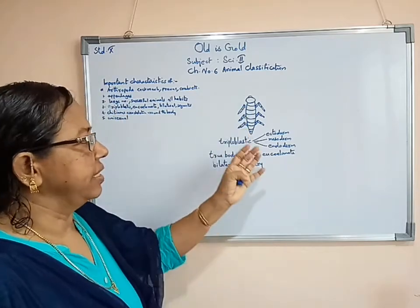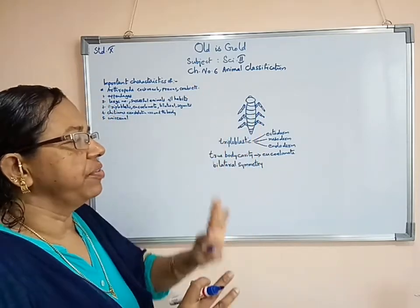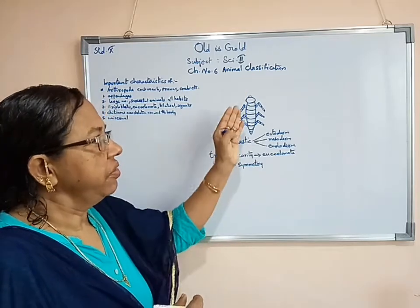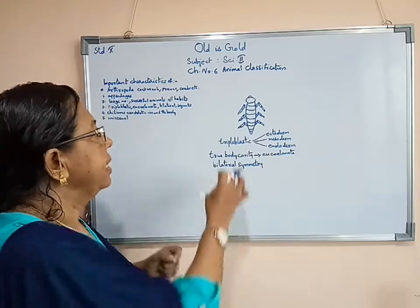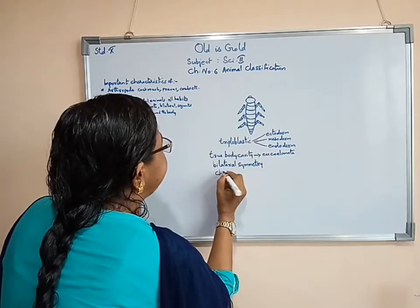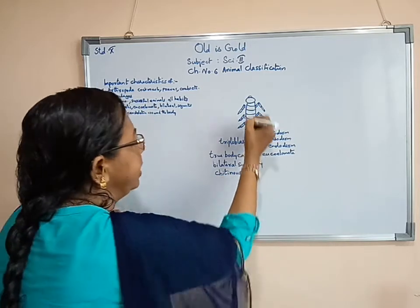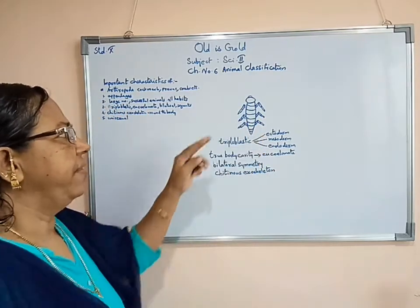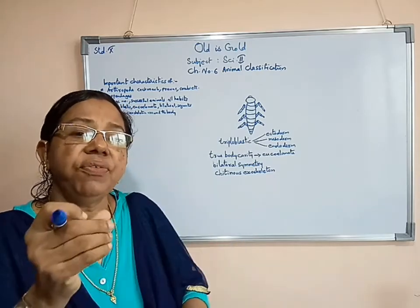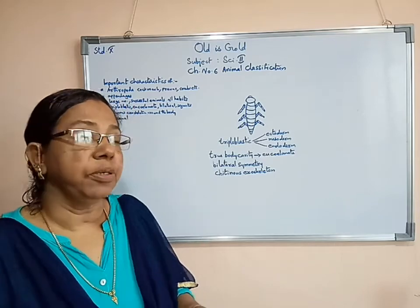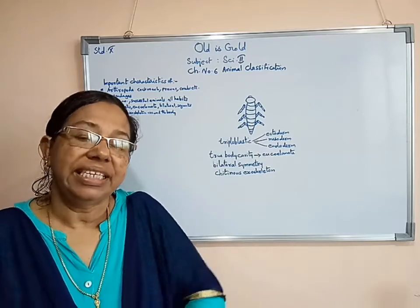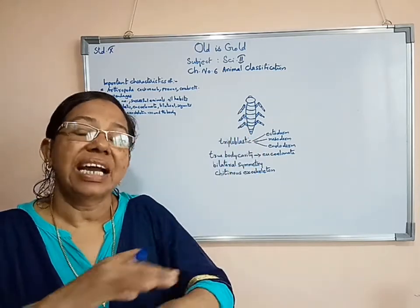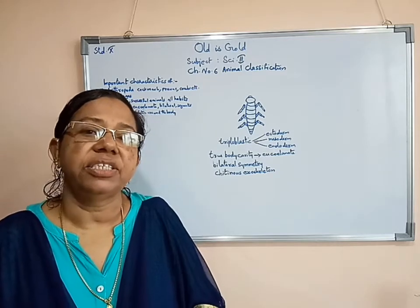Their outer surface — around its body, all parts — is covered with the help of a particular type of chemical. It is a hard substance with which all parts are covered. So we can say that their body has a chitinous exoskeleton. Chitin is a chemical, a hard substance. When we touch its surface, we will feel a hard feeling. That is because of this chemical — chitin — with which its body surface is made. So its body is covered with a chitinous exoskeleton.